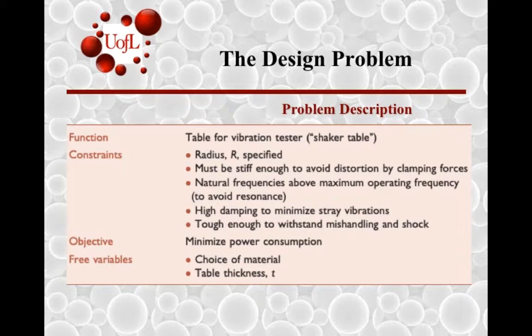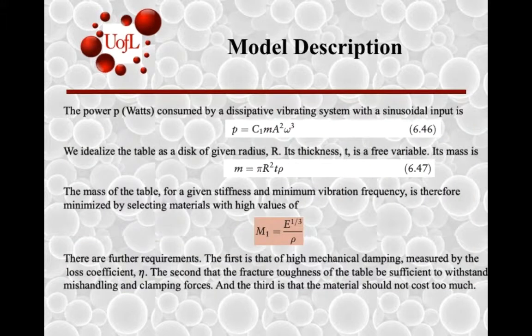The material must meet several requirements: it has to be stiff enough to avoid distortion, have natural frequencies above the operating frequency to avoid resonance, have high damping to minimize vibrations, and be tough enough to withstand shock. The analysis covers the thickness, mass of material, bending stress, and moment — together finding the material index given by the cube root of Young's modulus over density.